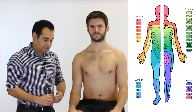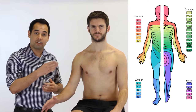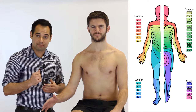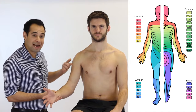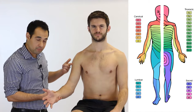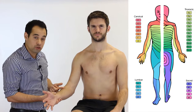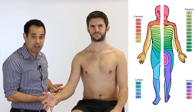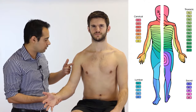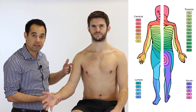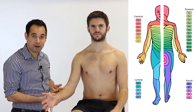Next is C5, and the way you can always remember C5 is one third to one third. C5 is from one third down the lateral humerus, going down the lateral side of the arm, to one third down the radial side of the forearm.